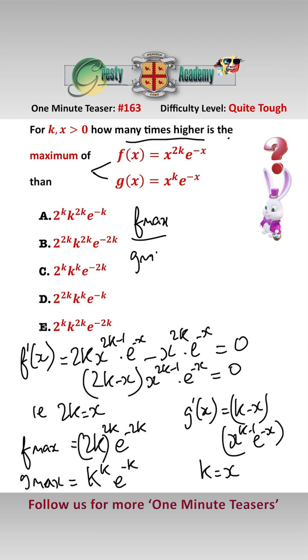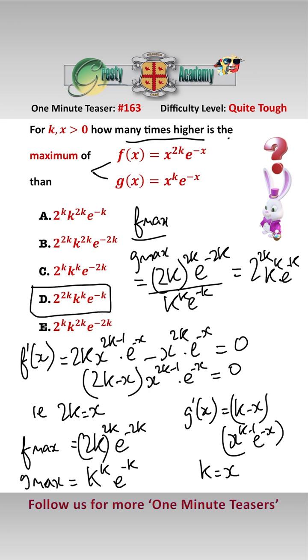So we want f_max over g_max, which equals (2k)^(2k) e^(-2k) over k^k e^(-k). And that simplifies to 2^(2k) k^k e^(-k), which is answer d.